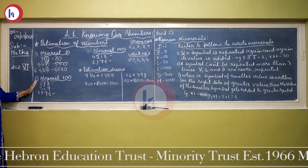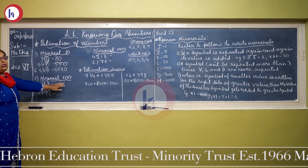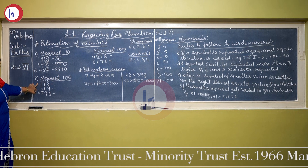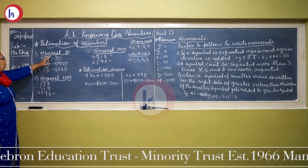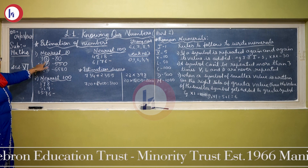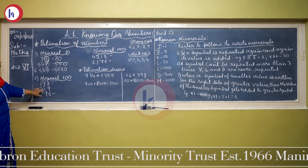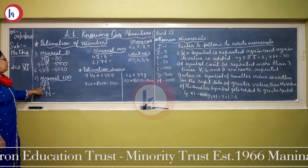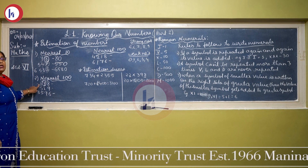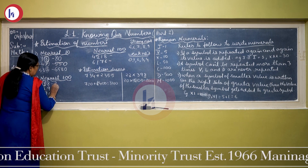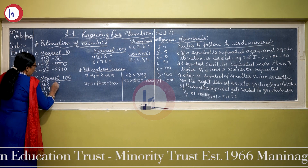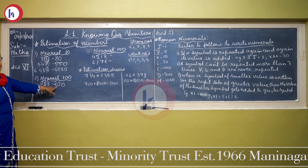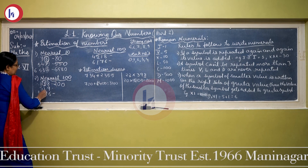Now with the same concept we will try to understand rounding off to the nearest 100. The concept is the same but here the place to look at is the tens place. For nearest 100, we have to see the tens place. Here the tens place is 7 — again a strong number. So 1 will be added to the hundreds place, making it 200. This 7 and the units place are both replaced by 0. So 178 is nearest to 200.